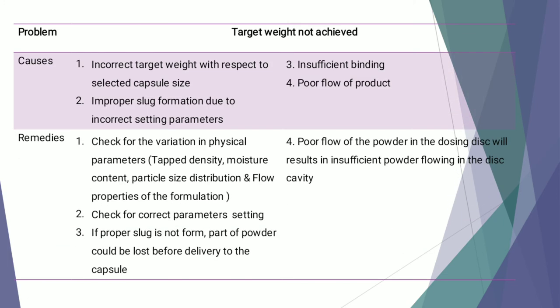The next defect is targeted weight not achieved. Causes include incorrect targeted weight with respect to selected capsule size, improper slug formation due to incorrect setting parameters, insufficient binding, and poor flow of product. Remedies include checking variation in physical parameters like tap density, moisture content, particle size, and flow properties of the formulation; checking for correct parameter settings; ensuring proper slug formation so powder is not lost before delivery; and addressing poor powder flow in the dosing disc cavity.